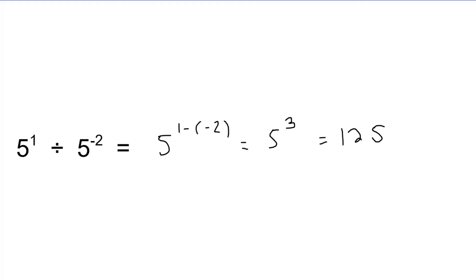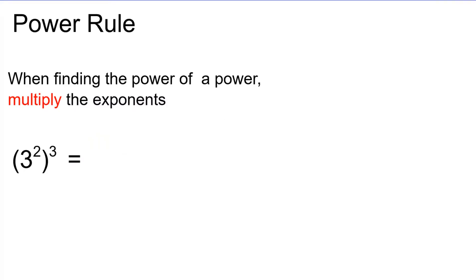Next up, we're going to look at the last thing, our power rule. So in the power rule, when finding the power of a power, we have to multiply our exponents. The easiest way to recognize when you use the power rule is there will be brackets with an exponent right next to another exponent.